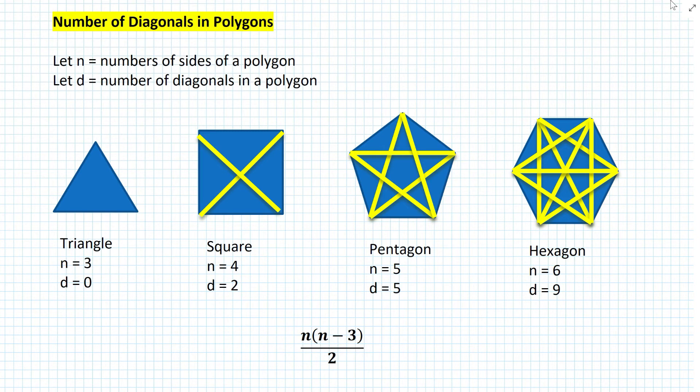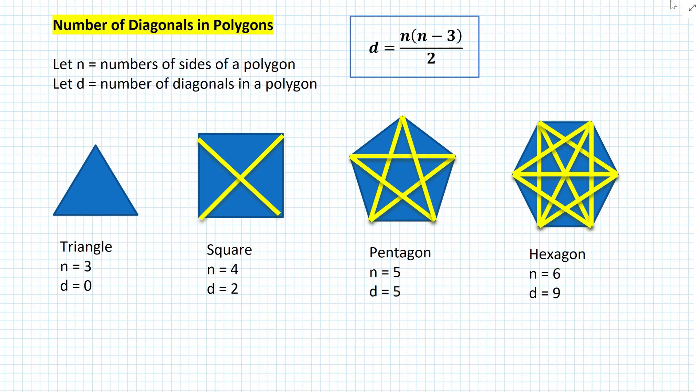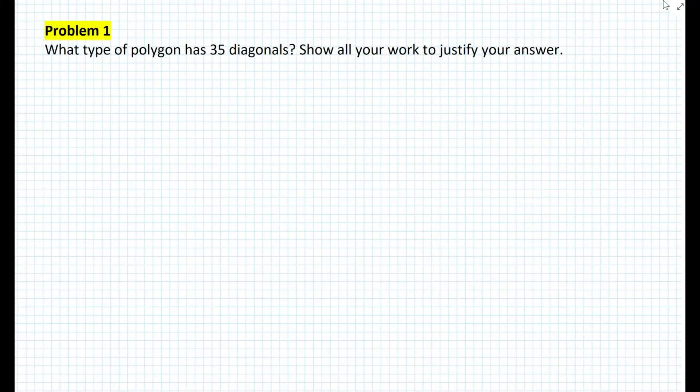So the number of diagonals of a polygon is always going to be N times (N minus 3), divided by 2. Let's look at a few problems now.